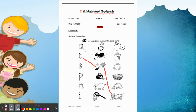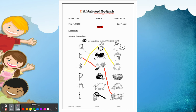The next one is S. S for snake and S for son. Then the next one is P. P for pig and P for pot.